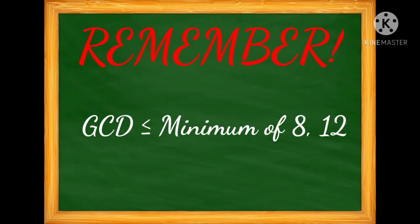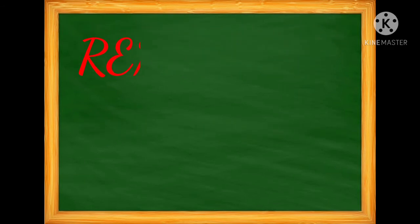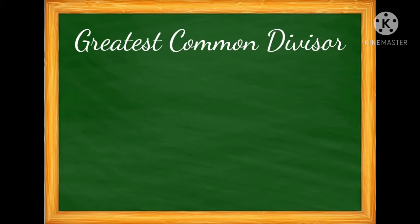will always be less than or equal to the minimum of 8 and 12. In other words, if you come up with the greatest common divisor, it cannot be greater than the smallest of the two numbers. Whatever we come up with for our GCD, it cannot be greater than 8. So now let's find the greatest common divisor.